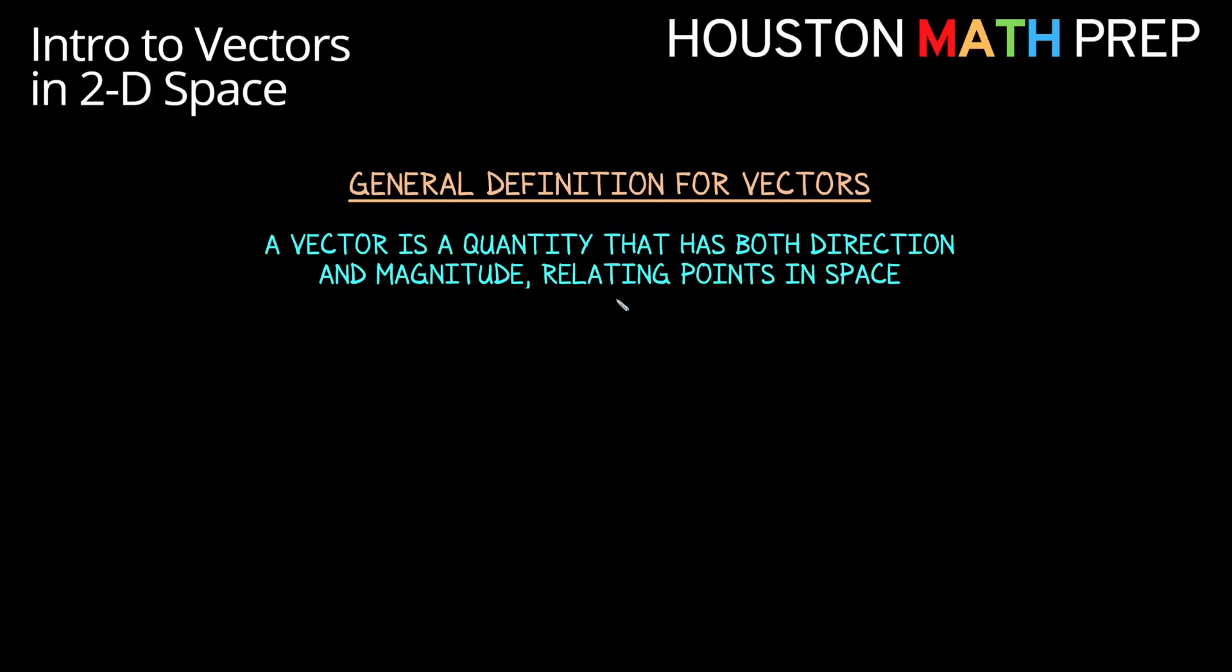The typical definition we hear for a vector in our first encounter is often the one we see here, that it's some kind of quantity that has information about direction and magnitude.